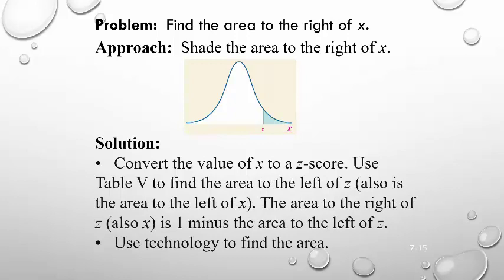To find the area to the right, you're going to convert the value of x that you have to a z-score. You're going to use the table that's attached in the classroom to find the area to the left. Then what you're going to do to find the area to the right is you just do one minus that area to the left. I will show you how to use your calculator for this.